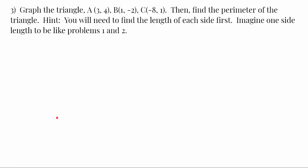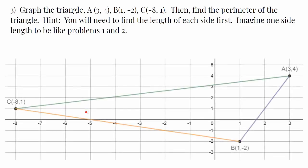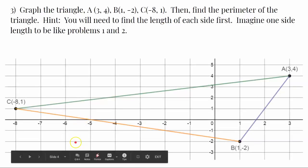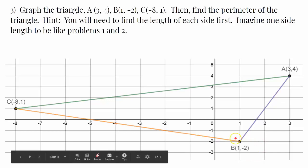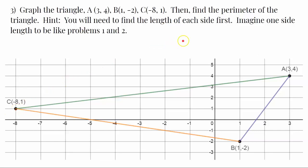Okay, I've provided you a little hint. So, first, I've graphed the triangle. Ordered pair A, (3, 4). Ordered pair B, (1, -2). Ordered pair C, (-8, 1).